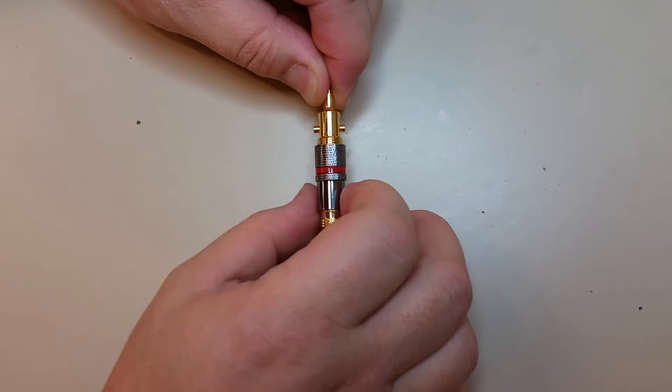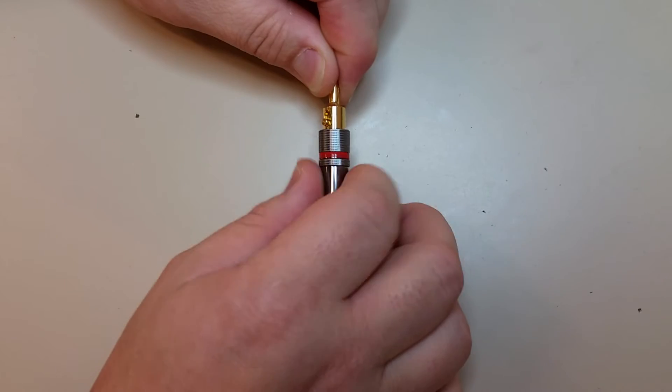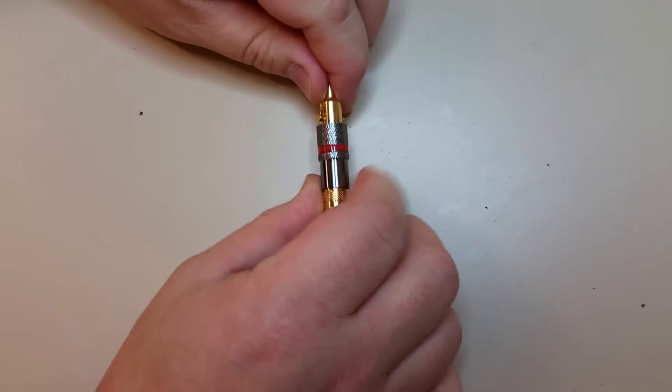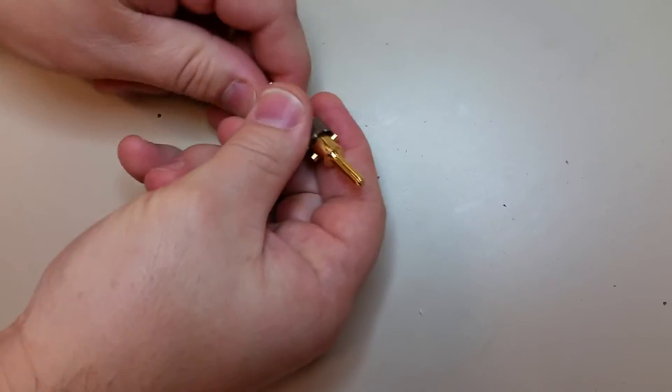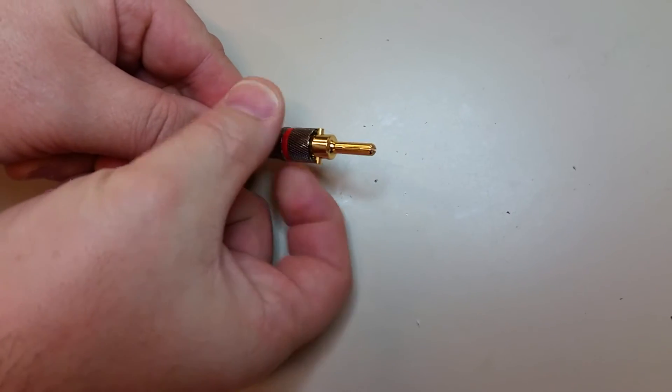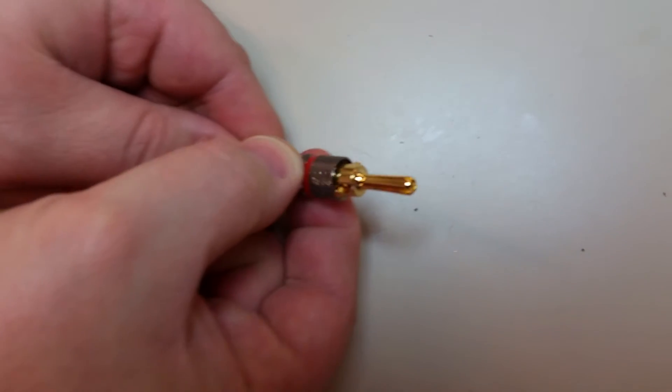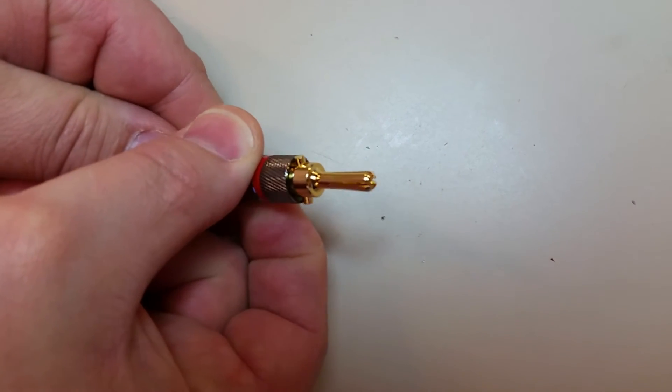You thread that down and it's going to push on that crossbar. As that crossbar gets pushed, you'll notice that the tip is expanding and getting larger. That's the locking mechanism.